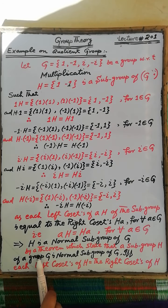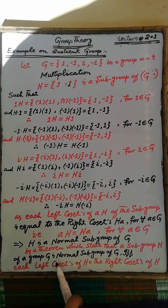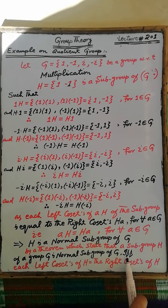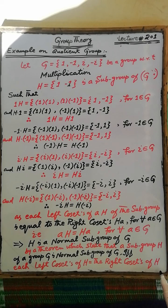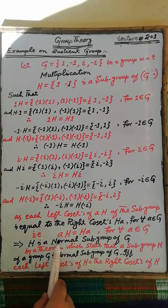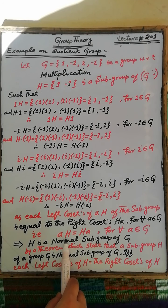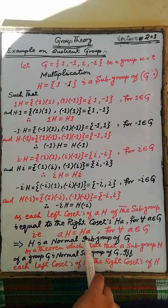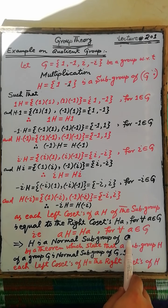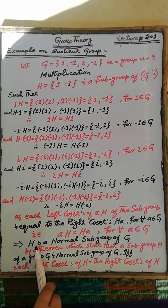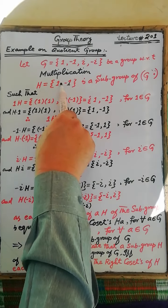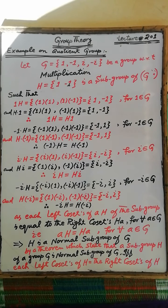By a theorem which states that a subgroup H of a group G is a normal subgroup of G if and only if the left coset of H in G is equal to the right coset of H in G. According to this theorem, since the left coset determined by each element of G is equal to the right coset determined by the same element A in G, we can conclude that the subgroup H of G is a normal subgroup of G.